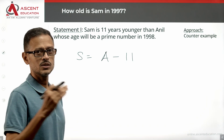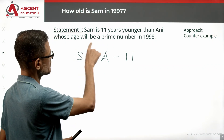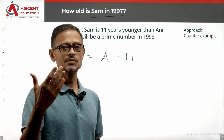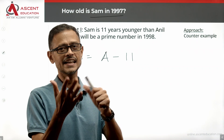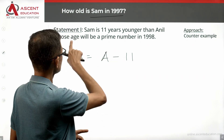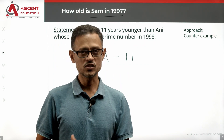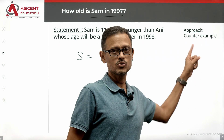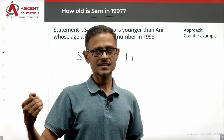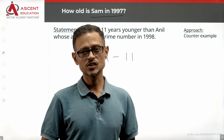So if Anil's age is A, then Sam's age is A minus 11. Now, Statement 2 tells us: whose age will be a prime number in 1998? Anil's age is a prime number in 1998. If we get different answers from different possibilities, then we have more than one answer and the data is not sufficient.